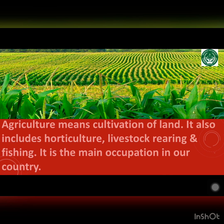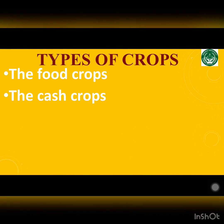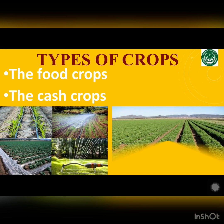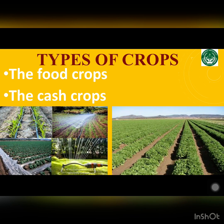Agriculture provides food for people and raw materials for industries. More than two-thirds of Indians are farmers and agriculture is the main occupation in our country. India has a favorable climate, fertile soil and good irrigation facilities to grow many crops.